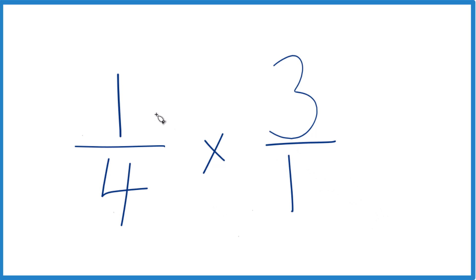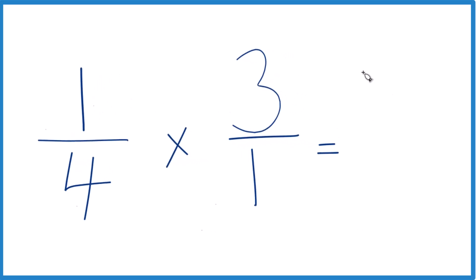When we're multiplying fractions, we multiply the numerators, then the denominators. So we take one times three, that gives us three, and then four times one, that gives us four.